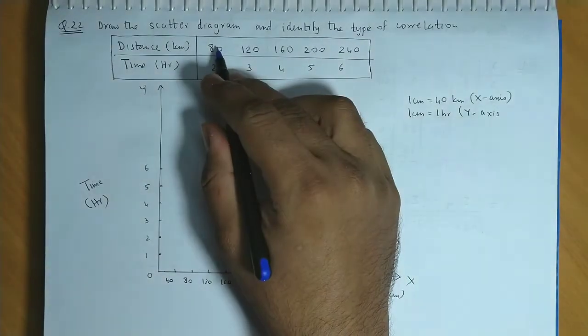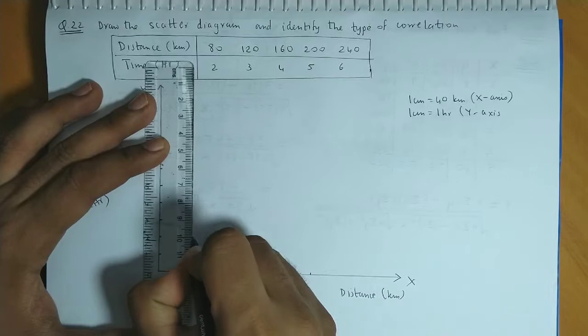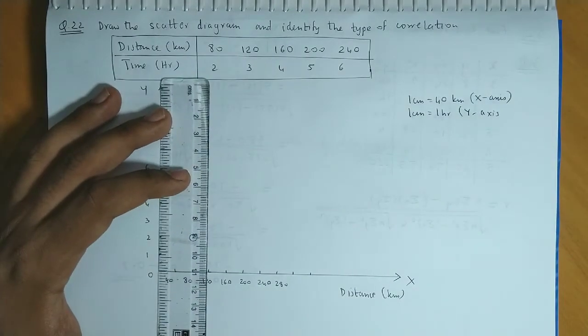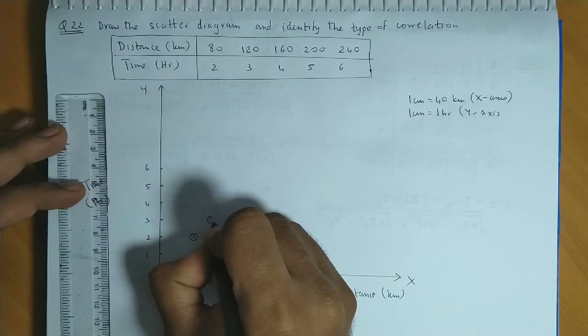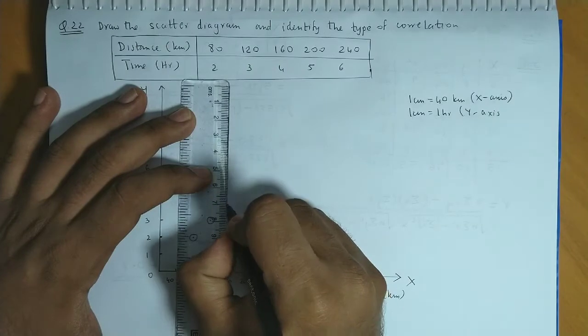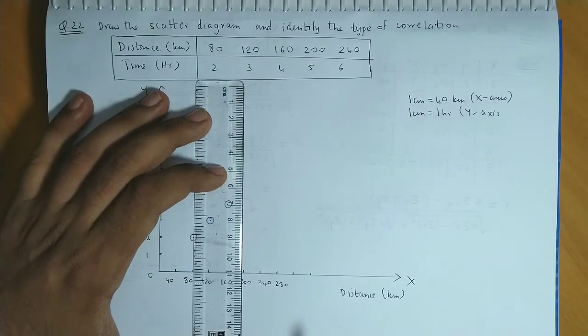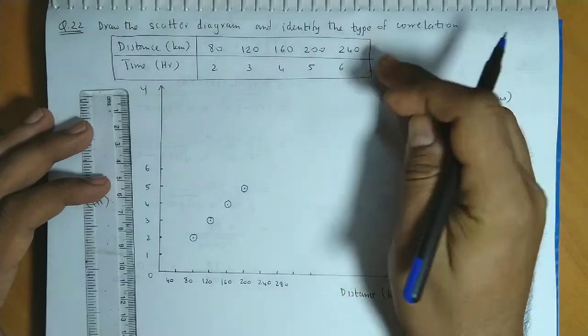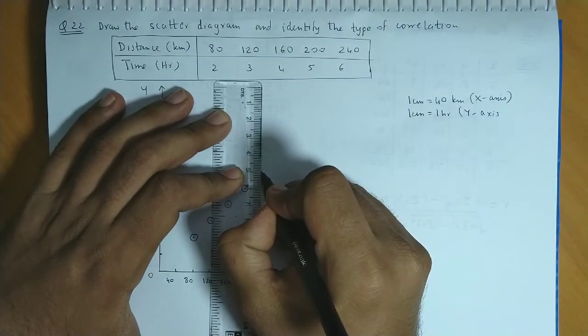So you plot the points: 80 and 2, then 120 and 3, then 160 and 4, next 200 and 5, and last is 240 and 6.